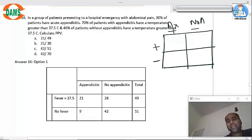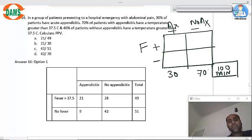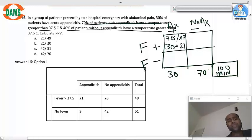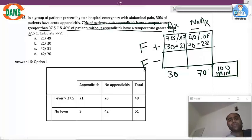There are 100 people with abdominal pain. 30 have appendicitis, 70 don't have. Fever present, fever absent. So 70 percent of patients with appendicitis have fever. So 70 percent of 30, that is 21. 40 percent of patients without appendicitis have fever. So 40 percent of 70, that is 28.